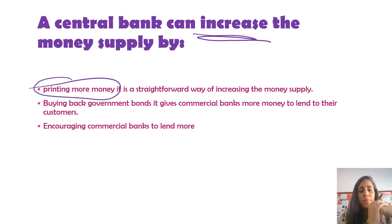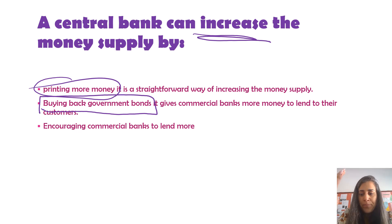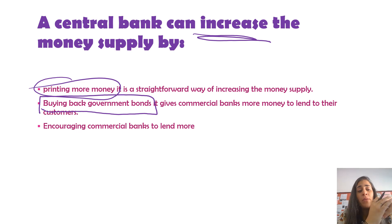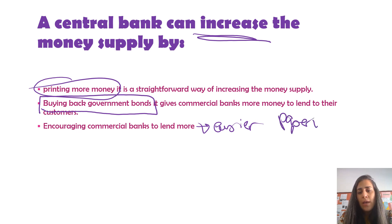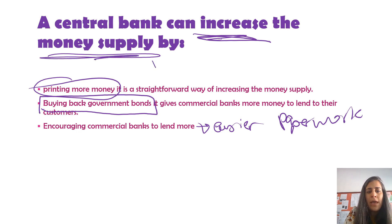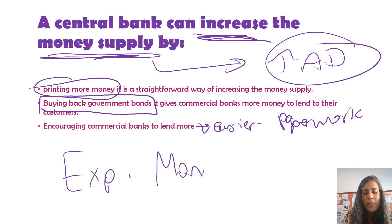How can a government increase money supply? First, the government can print more money — this is a straightforward way of increasing the money supply. Also, the government could buy back government bonds, which gives commercial banks more money to lend to their customers, so people can borrow and spend more. The government can also encourage lending by making paperwork easier for taking loans from the bank. An increase in money supply leads to an increase in aggregate demand — this is expansionary monetary policy.